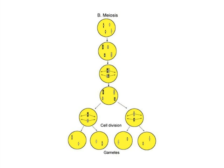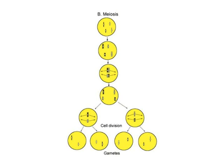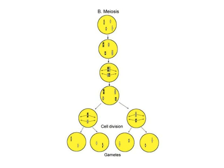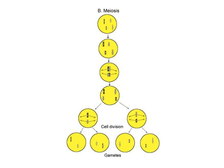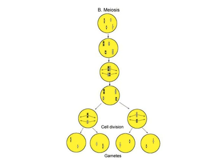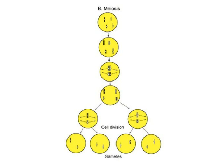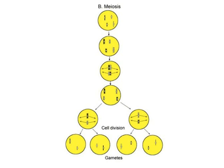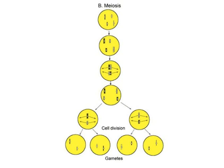Now that we have learned what happens in the cell during the process of cell division, let's review the process of meiosis. Meiosis is very similar to mitosis. During meiosis, the DNA is copied once, but the cell divides twice. This creates four cells that have half a set of chromosomes. Instead of 46 chromosomes, egg and sperm cells have 23.